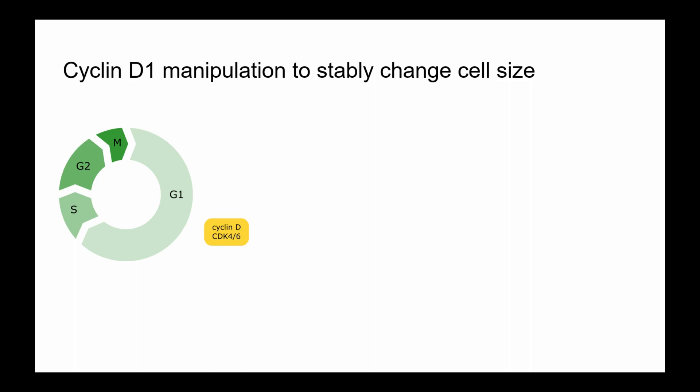To study this, we needed a system where we could stably maintain cells at different sizes. I chose to manipulate the G1 phase of the cell cycle, which is driven by Cyclin-D CDK4/6 activity. By reducing or increasing that activity, you can slow down or speed up the cell cycle, and because the cell is still growing during this phase, you can therefore manipulate cell size.